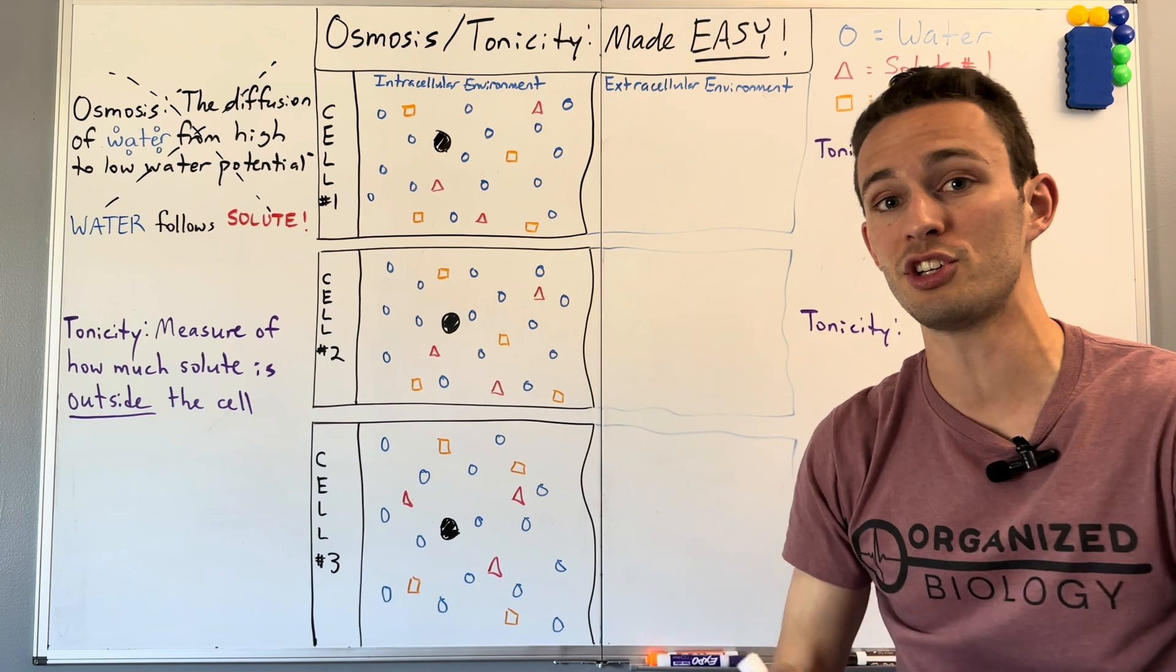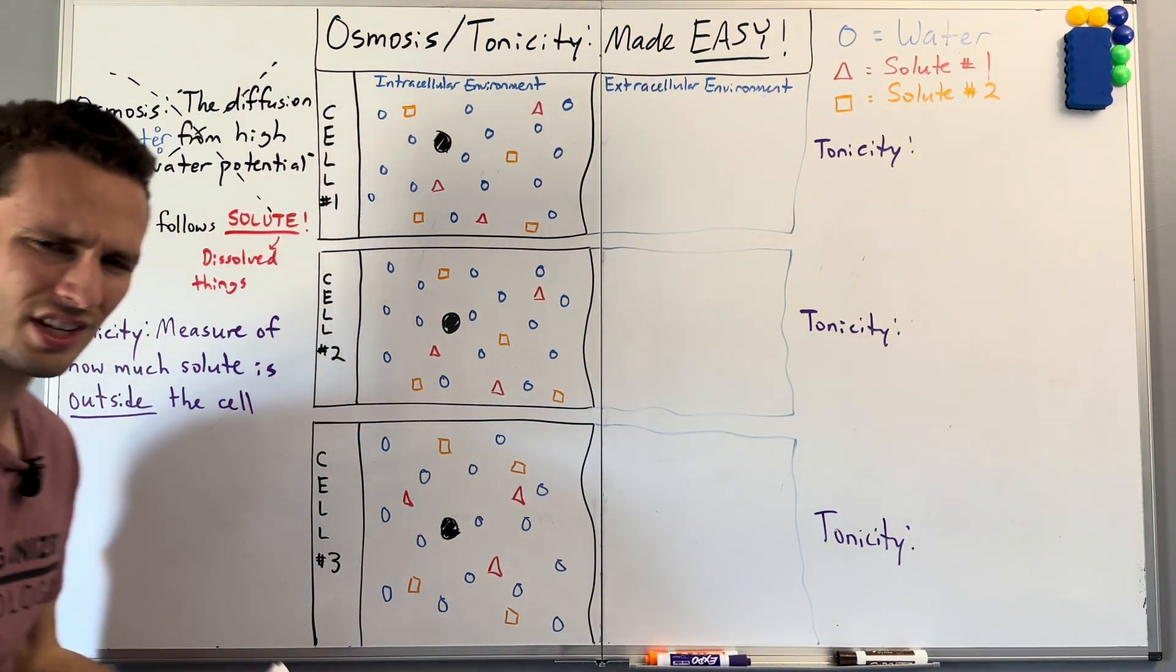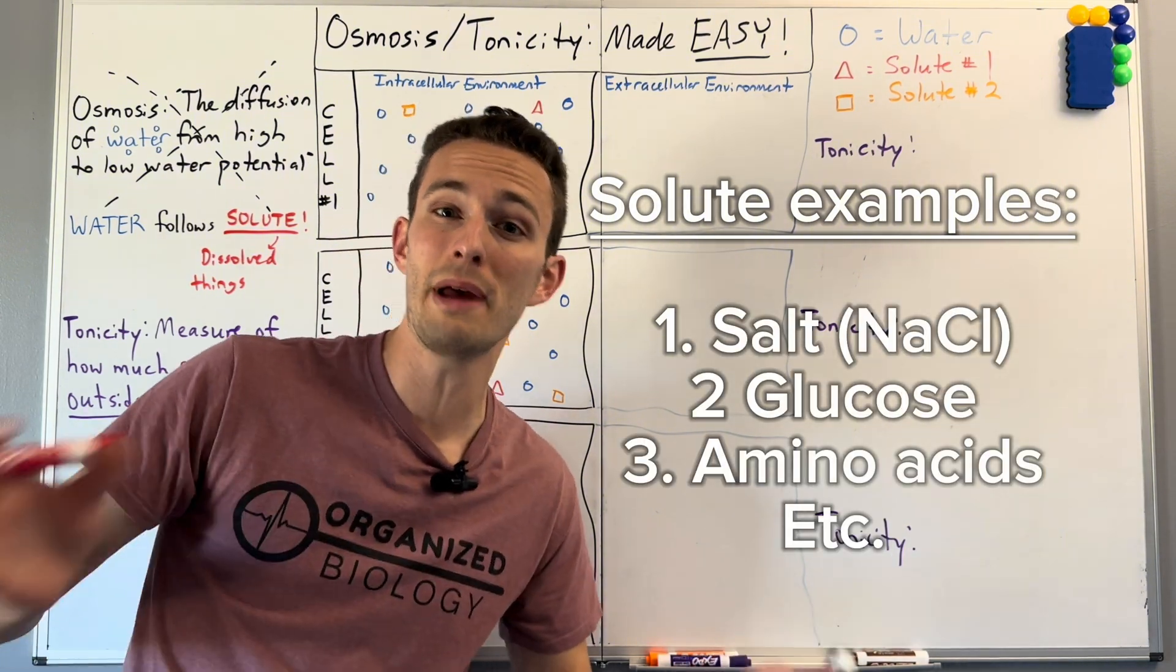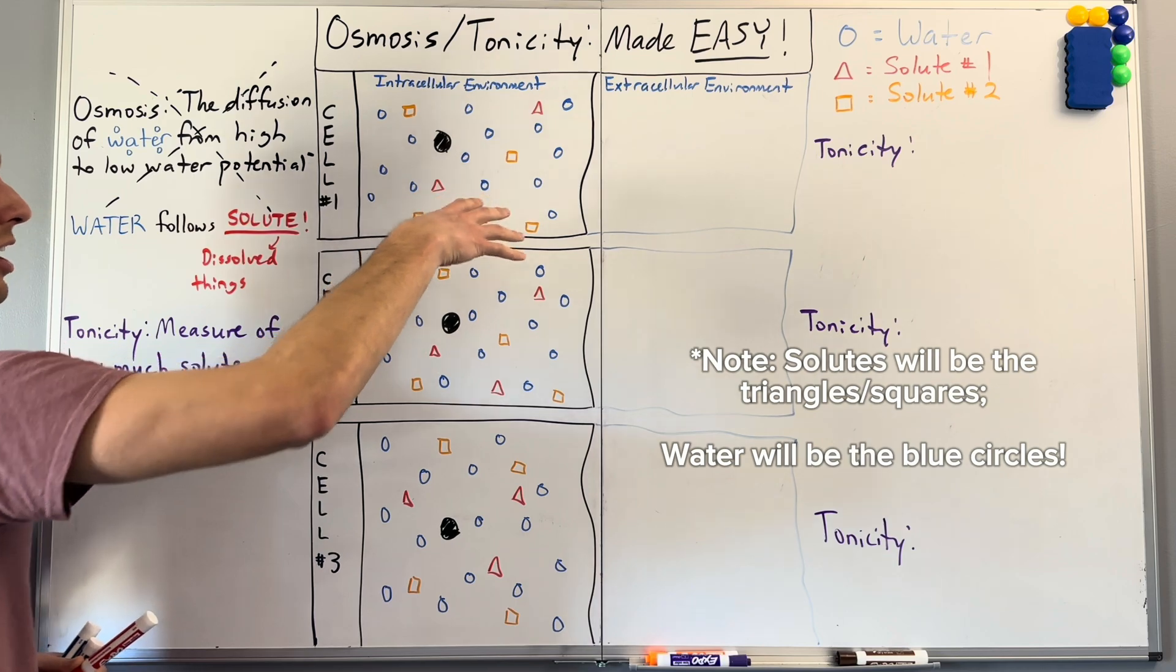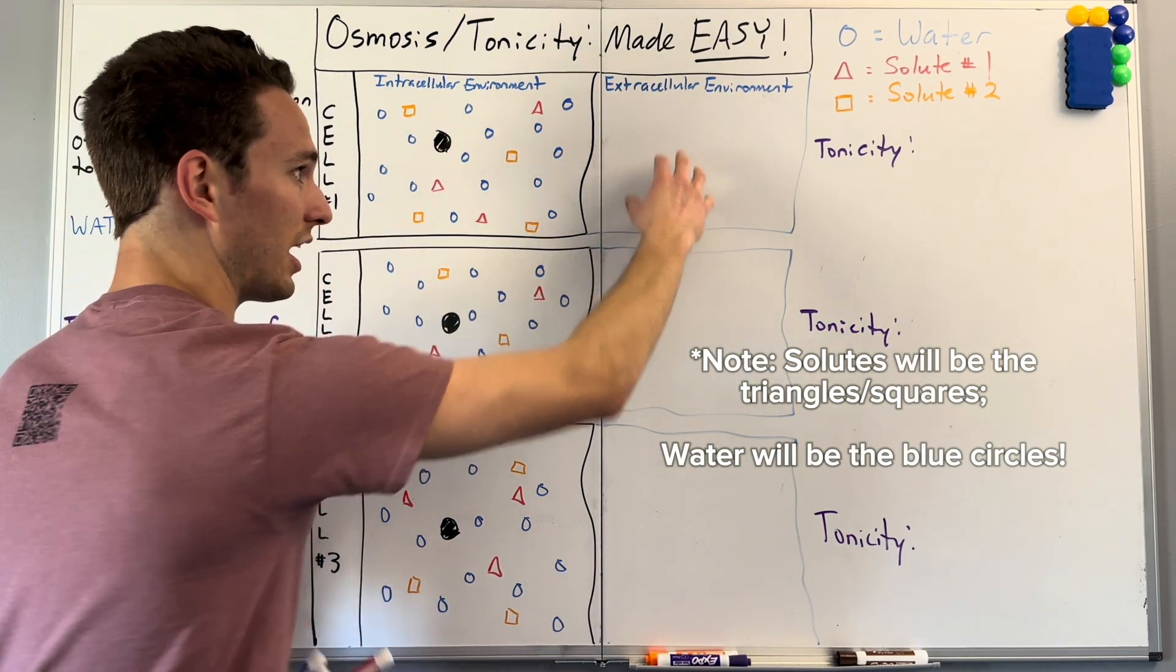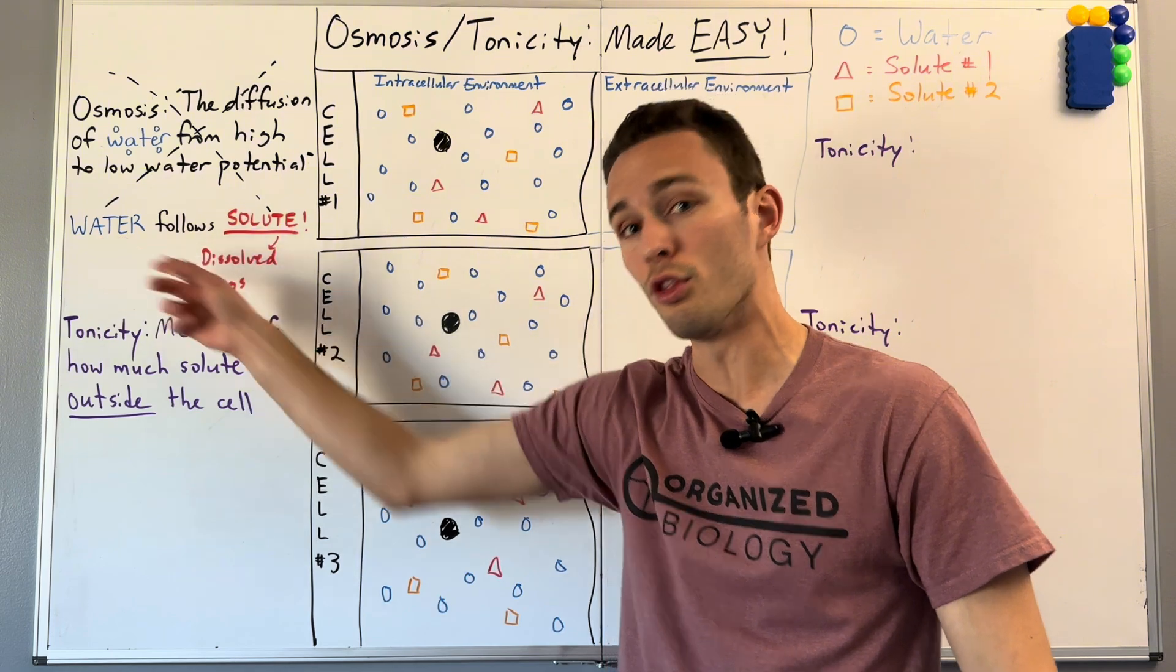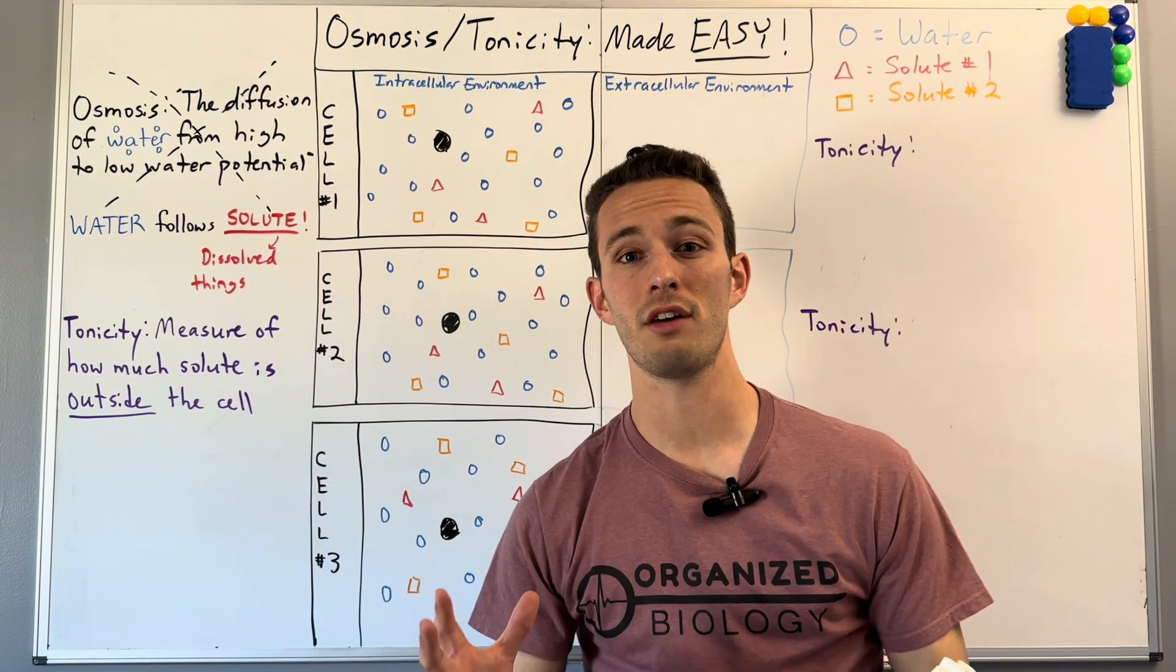We also have things called solute, which is just things dissolved in the water. This can include things like salt and glucose and amino acids, other things you may have heard of before, and they are going to be packed inside the watery environment of your cells as well as outside. And what you need to know is osmosis is when water is following those dissolved things.